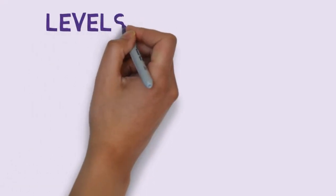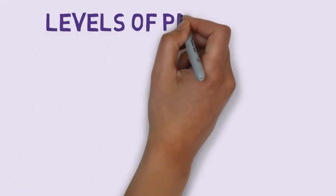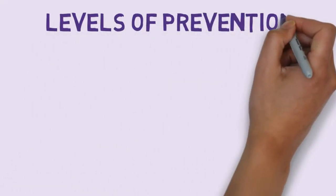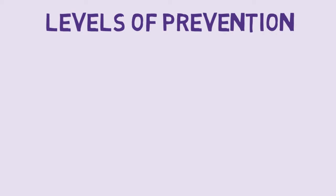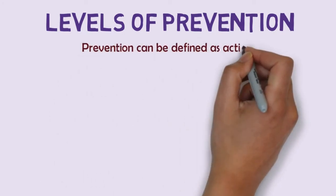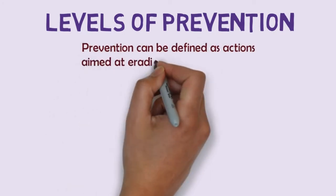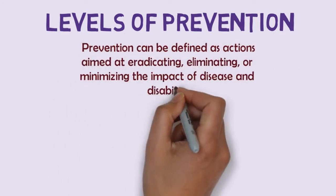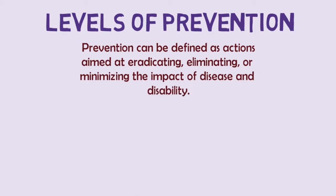Hello and welcome to this video where we are going to be talking about levels of prevention in public health. First off, let us define prevention. Prevention can be defined as actions aimed at eradicating, eliminating or minimizing the impact of disease and disability.